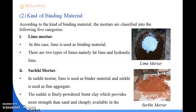Next is kind of binding material. There are five categories: first is lime mortar, surkhi mortar, cement mortar, gauged mortar, and gypsum mortar. In lime mortar, lime is used as a binding material. There are two types of lime — fat lime and hydraulic lime. This lime mortar has high plasticity and it can be placed easily. It is sufficiently durable but it hardens slowly.